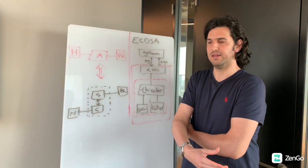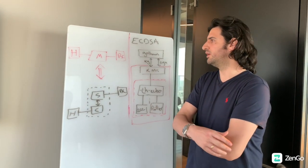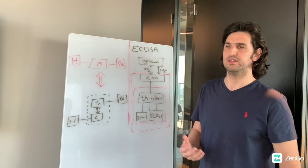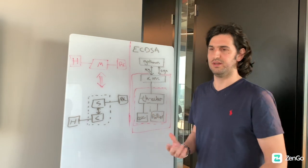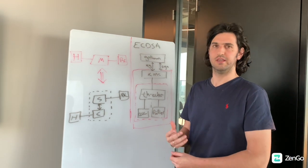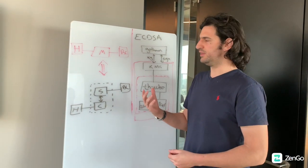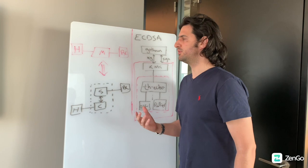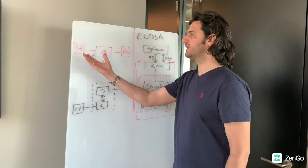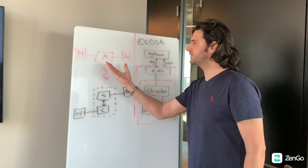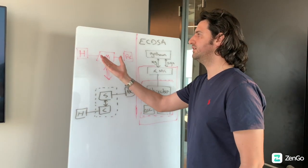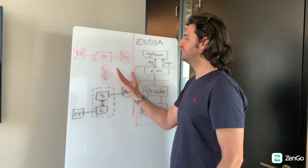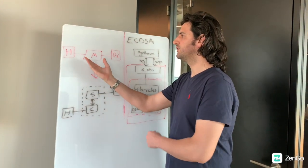I would like to start by giving you the high-level model of what is a wallet. A wallet, or another name, a key management system, can be looked at as composed of three different boxes: we have a machine, we have a human, and we have a blockchain. Let's understand each one of those.